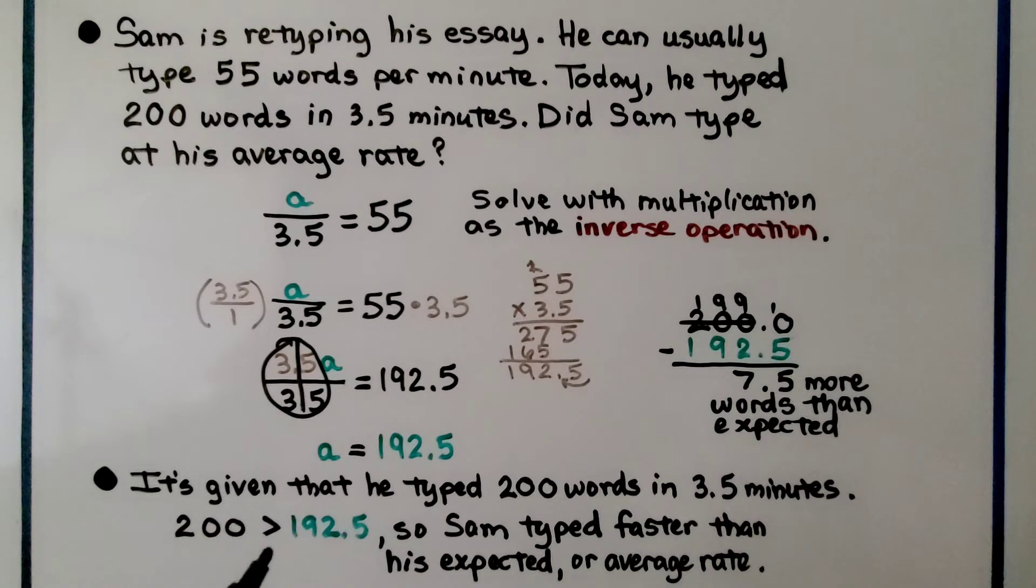200 is greater than 192.5, so Sam typed faster than expected at his average rate. He typed 7.5 more words than expected.